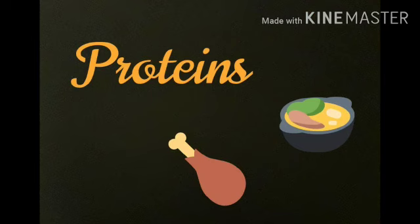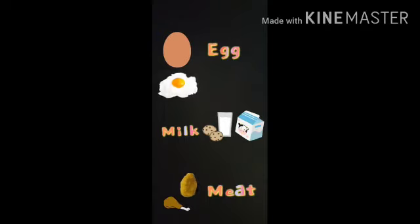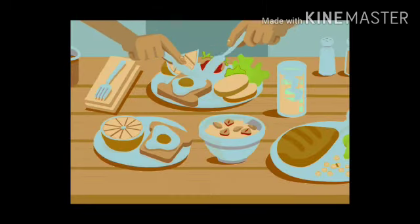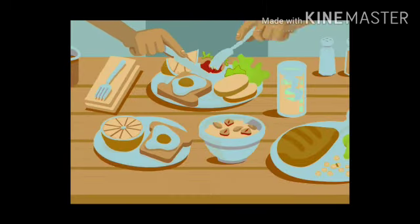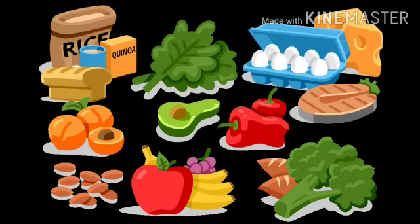Now moving on to proteins. These nutrients help us to build our body — basically they help in our growth. We can get proteins from egg, meat, milk, etc. So now dear children, as you all have understood how much food is important for all of us.